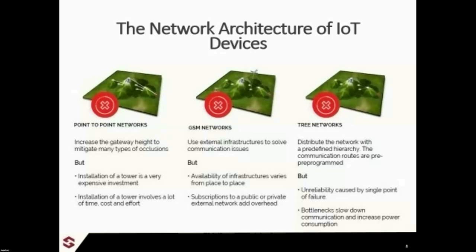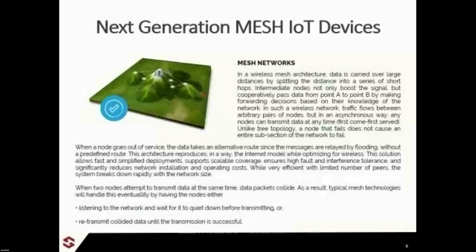Star network setups are basically a central point of failure. So what we've developed is effectively a mesh IoT system. A mesh system is basically a tree or network where every node is also a repeater. That entire network has unlimited geographical connectivity.